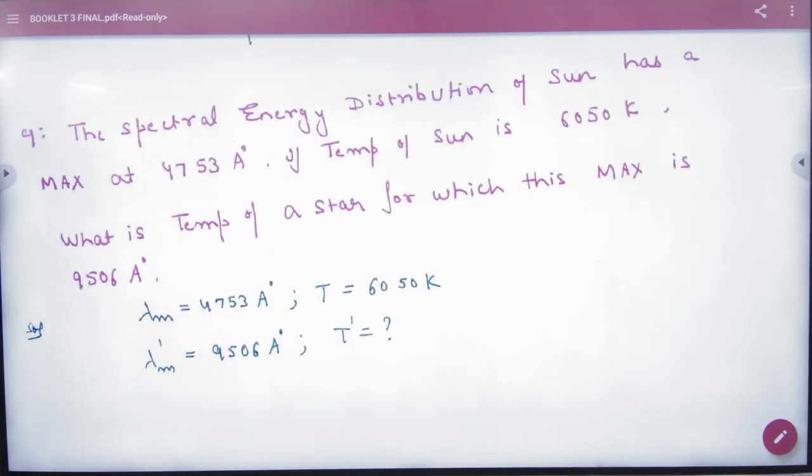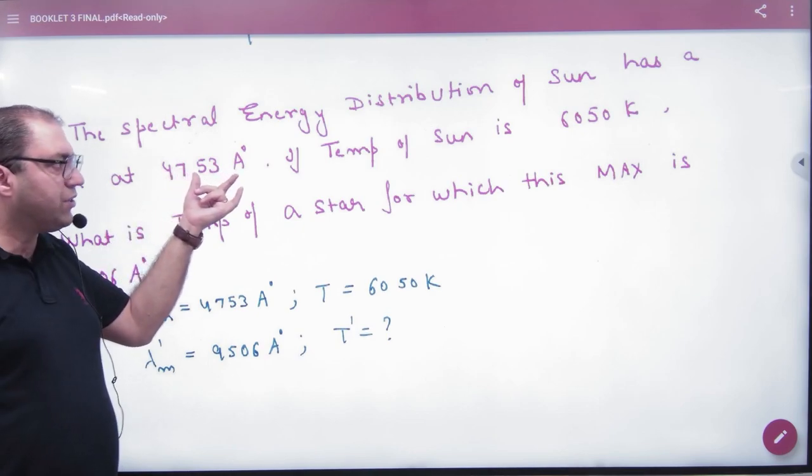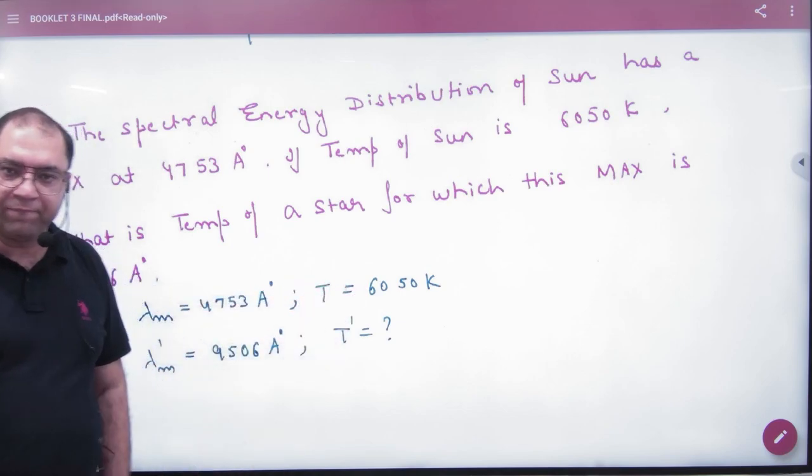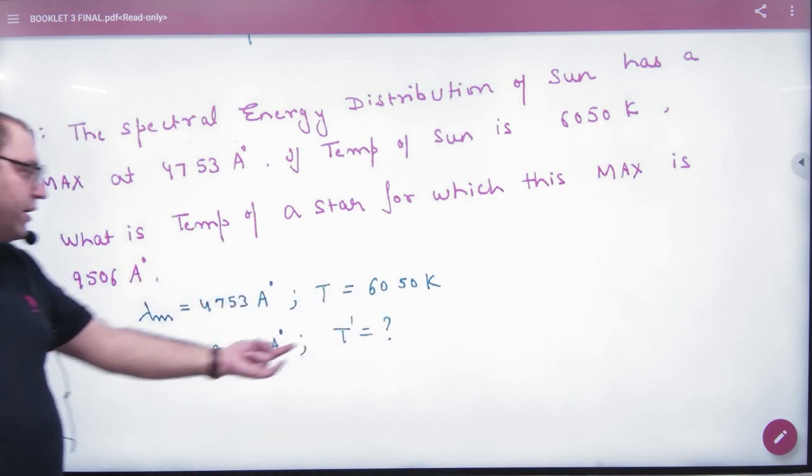Spectral energy distribution of sun has maximum at 4753 angstrom. Sun has its energy out. And the maximum value of lambda M was at maximum when the temperature of sun was 6050 Kelvin. Now he is saying, tell me, what will be the temperature of star? With which lambda M is equal. So you have two things given. One is sun: lambda M and T is given. One is star: lambda M dash and T dash.